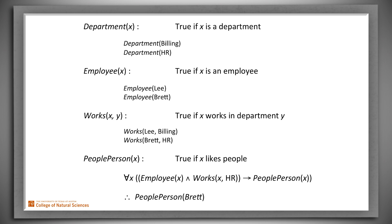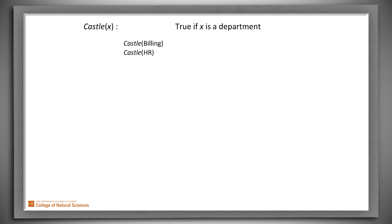Notice that we read out the conclusion using the same mapping between English and logic that we used to state our original definitions. Because we chose predicate names that made sense to us, it was actually easy for us to do that. But the logical engine itself doesn't care that we chose such sensible predicate names. So we could instead have written something like this. Castle of X is true if X is a department.